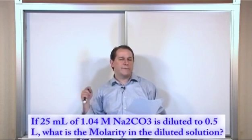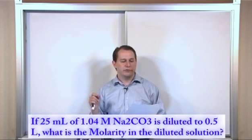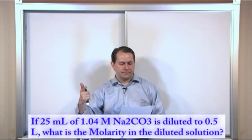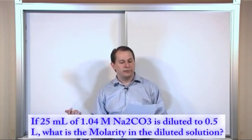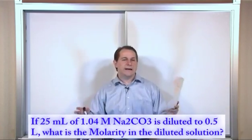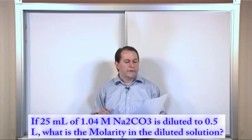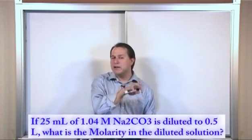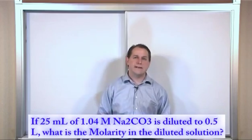But initially, we know we have 25 milliliters of 1.04 molar solution. So we have the volume and we have the molarity initially. And then we dilute it. We have a new volume, and we're trying to find a new concentration. But the number of moles of solute on both ends is never going to change because we never added or subtracted any solute. So if we can just find the number of moles of solute we began with, we can apply that to the final solution because that doesn't change, and then we can find that concentration.